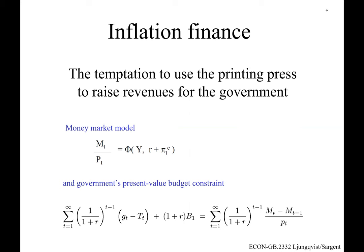Two key things will be in play: a model of the money market, and the present value or intertemporal version of the government's budget constraint. In the money market model, there's a supply of real balances — nominal money M divided by the price level P — whose units are goods. So M over P at time T has the units of goods, and on the right-hand side is a demand function.